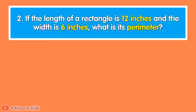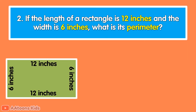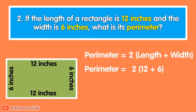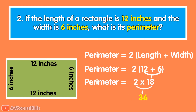If the length of a rectangle is 12 inches and the width is 6 inches, what is its perimeter? The perimeter of a rectangle is 2 times (length plus width). Length is 12 inches and width is 6 inches. Add 12 plus 6 to get 18, then multiply 18 by 2 to get 36. So the perimeter of the rectangle is 36 inches.